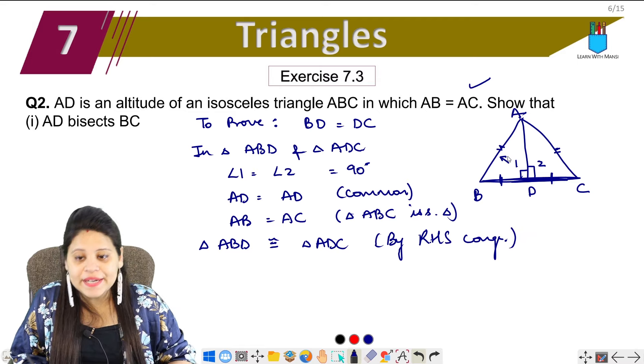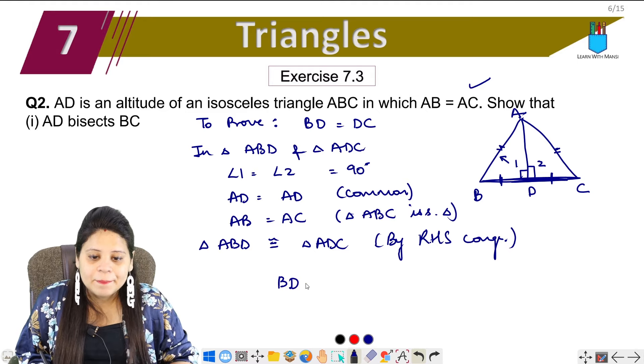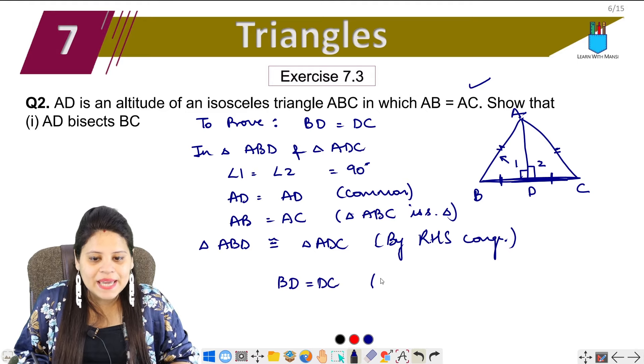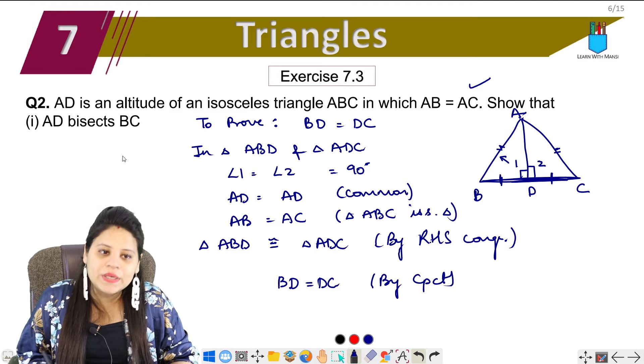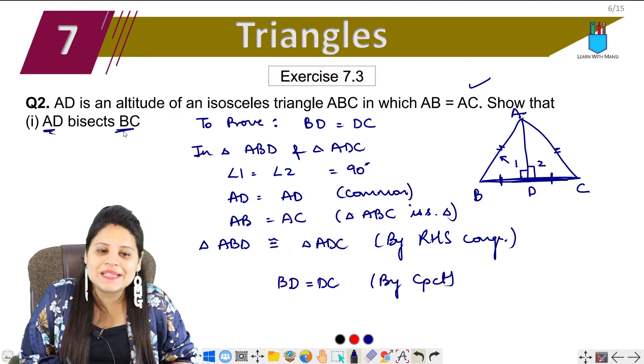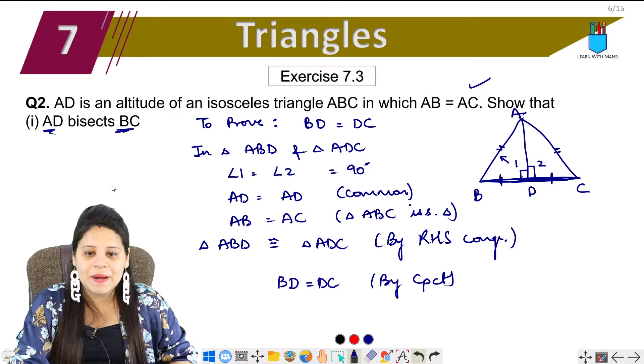So these two triangles are congruent. If we can write two triangles are congruent, then we can write simple. BD is equal to DC by CPCT. And if both are equal, we can say AD bisects BC. Okay, so this is my first part. Let's come to the second part.